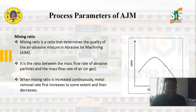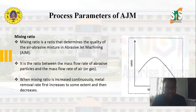The next parameter is mixing ratio. Mixing ratio is the ratio that determines the quality of the air-abrasive mixture in abrasive jet machining. It is the ratio between the mass flow rate of abrasive particles and the mass flow rate of air or gas used. When mixing ratio is increased continuously, metal removal rate first increases to some extent and then decreases, as shown in the graph.